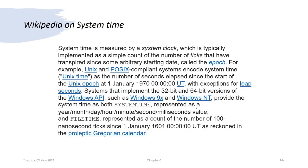According to Wikipedia, system time is measured by the system clock, which is typically implemented as a simple count of the number of ticks that have transpired since some arbitrary starting date called the epoch. This system time is the time in seconds since January 1st, 1970 Universal Time (GMT), with the exception of leap seconds. Windows uses this system time.